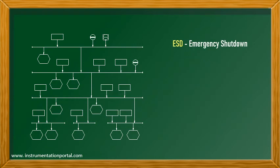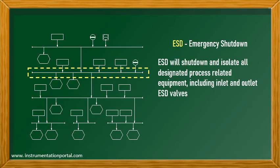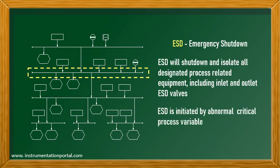Next is ESD, or emergency shutdown. ESD will shut down and isolate all designated process-related equipment, including inlet and outlet of plant ESD valves. ESD is initiated by abnormal critical process variables.